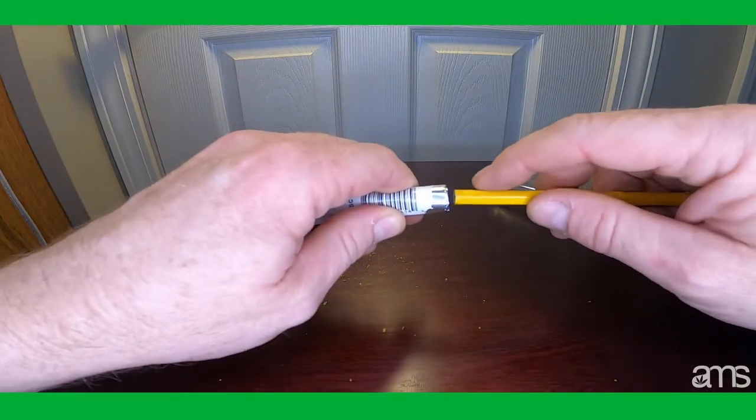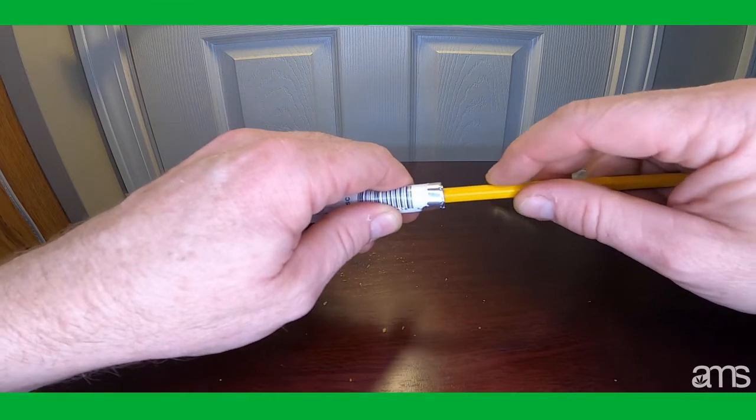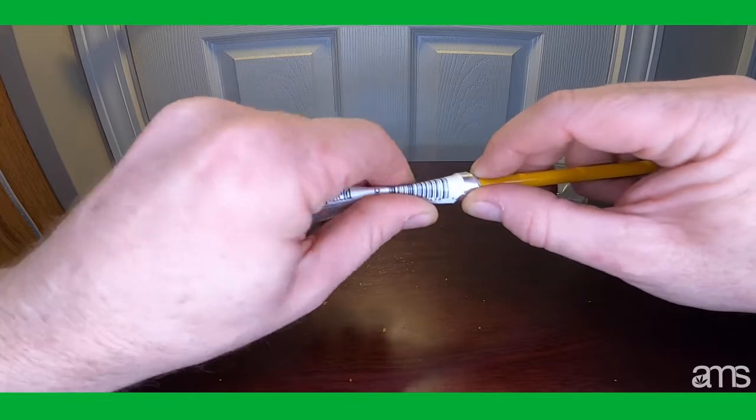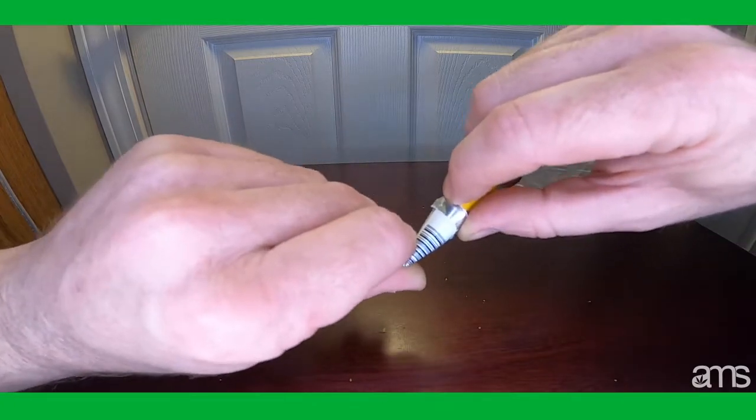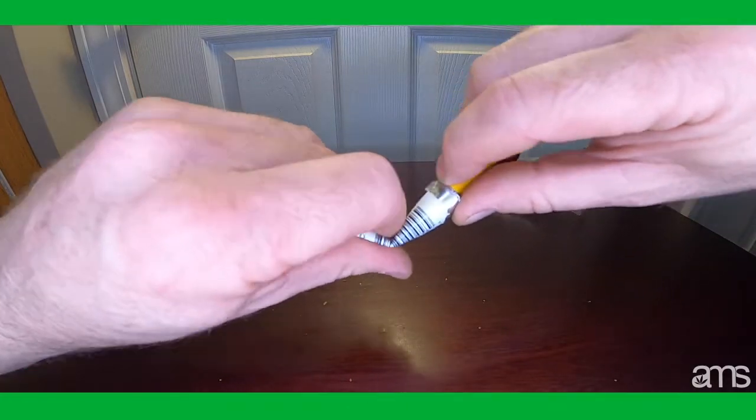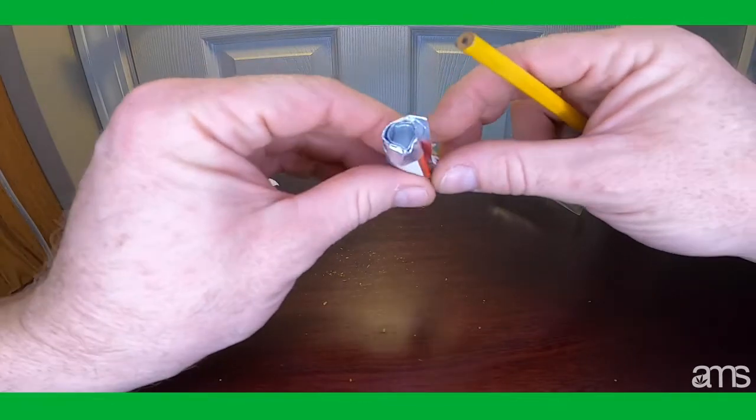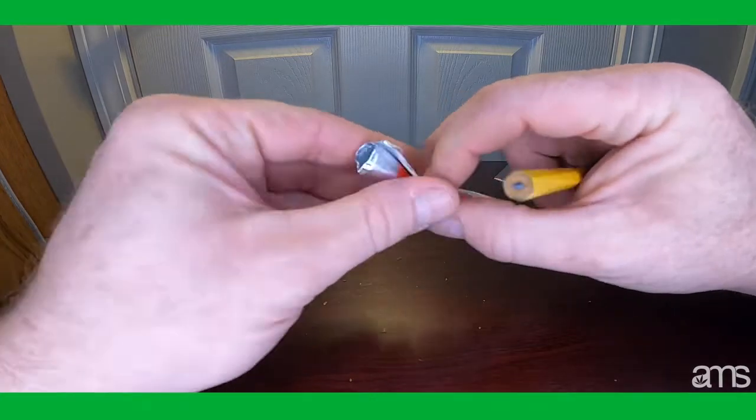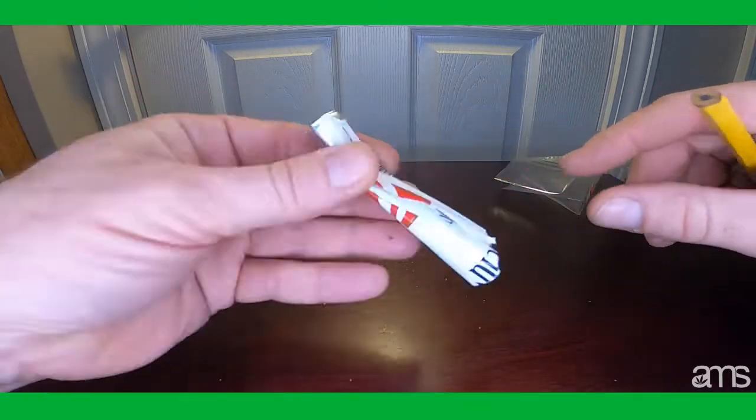And then put the pencil in about the depth of the bowl that you want. You can pinch, give it a little kink. And then you can see it's still closed up a little bit, and then you can squeeze it a little bit so it has a little gap, and there you go.